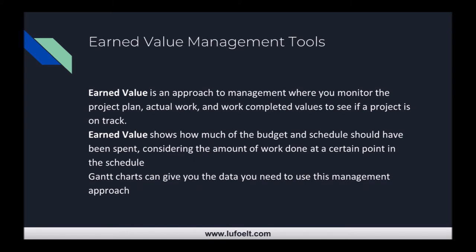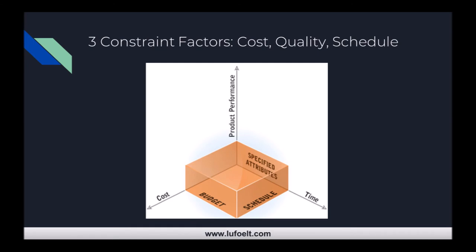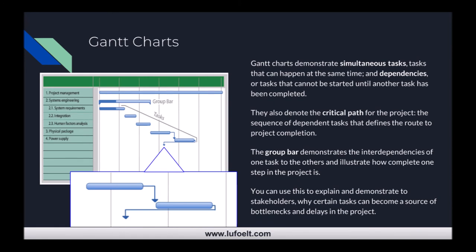Earned value management shows you how much of the budget and schedule should have been spent by a particular point, considering the amount of work at a certain place in the project. This takes into account the constraint factors we looked at before. Gantt charts can give you the data you need to use this management approach — you understand the concepts and then get specific data through using Gantt charts.